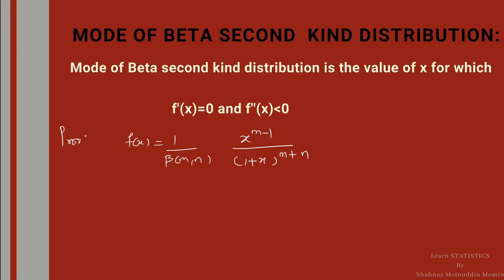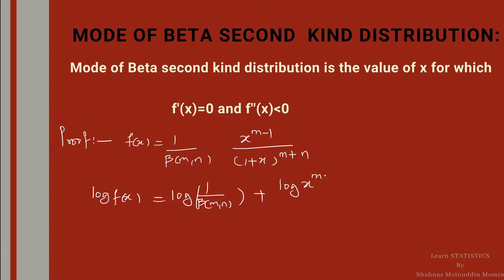This is the PDF of the beta second kind. Now we will take the logarithm on both sides. Then we get: log f(x) = log[1 / Beta(m,n)] + log x^(m-1) - log(1 + x)^(m+n).